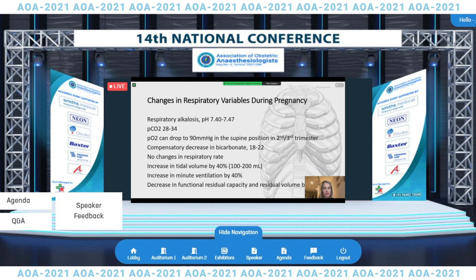The normal physiologic changes in pregnancy include a respiratory alkalosis with a pH of 7.4 to 7.47. The PCO2 generally ranges from 28 to 34, and the PaO2 can drop as low as 90 in the supine position in the second and third trimester. There is a compensatory decrease in bicarbonate of 18 to 24, and there is no change in the respiratory rate. However, there is an increase in tidal volume and an increase in minute ventilation by approximately 40%. There is a decrease in functional residual capacity and residual volume by approximately 20%. Pregnant women are prone to hypoxemia due to decreased functional residual capacity, increased alveolar ventilation, and increased oxygen consumption.